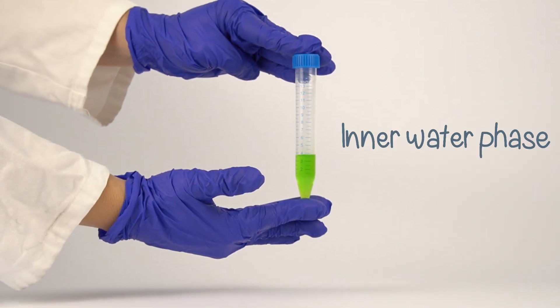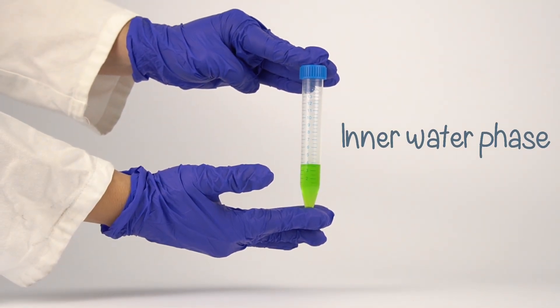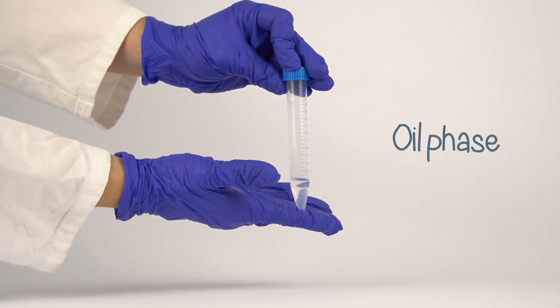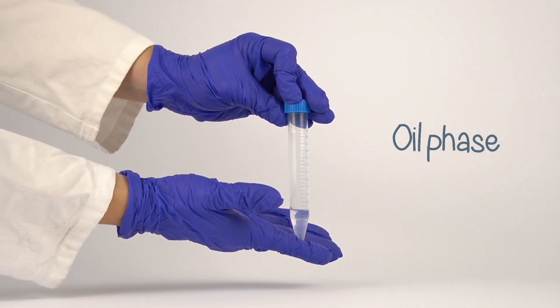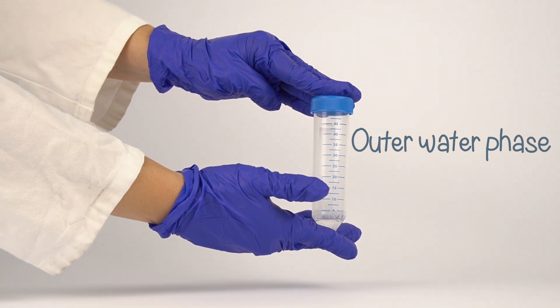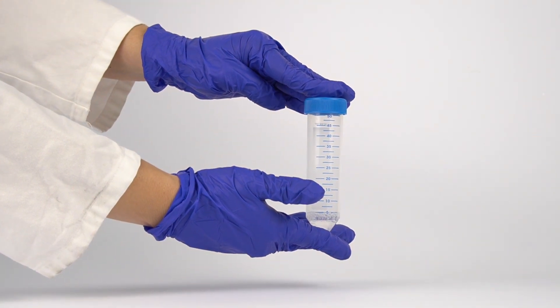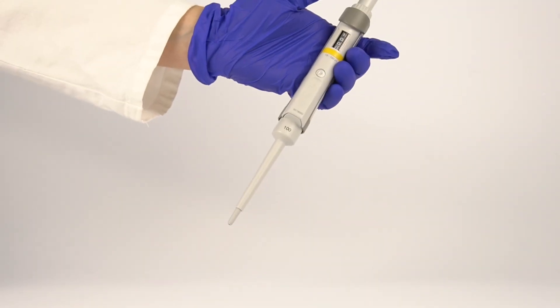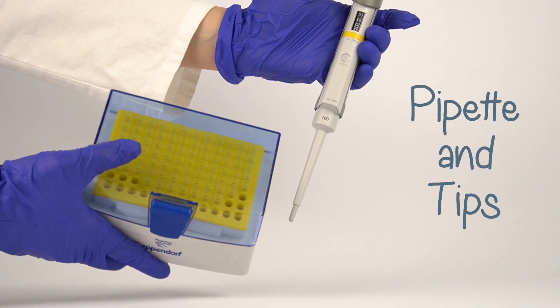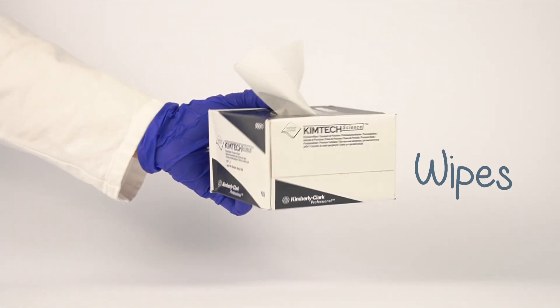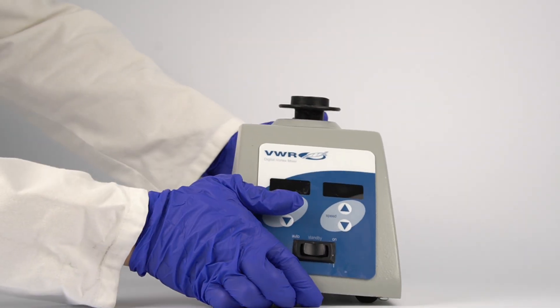We will need the inner water phase here dyed in green, the oil phase containing surfactant to stabilize the single emulsion droplets, the outer water phase that completes the double emulsion also containing surfactants, a pipette and pipette tips, and some wipes to keep everything as neat as possible. Finally, a vortex for emulsification.